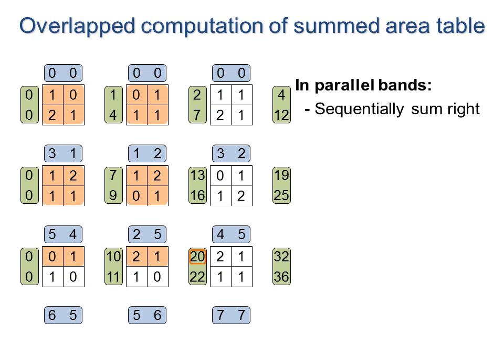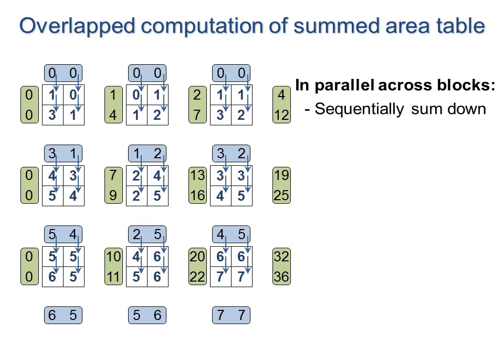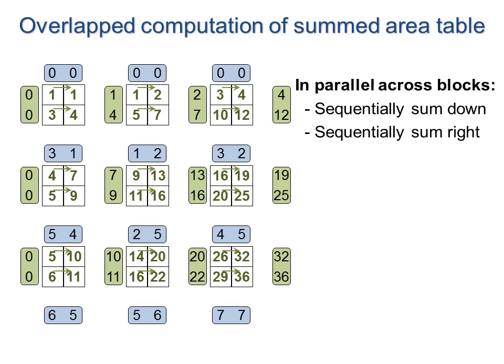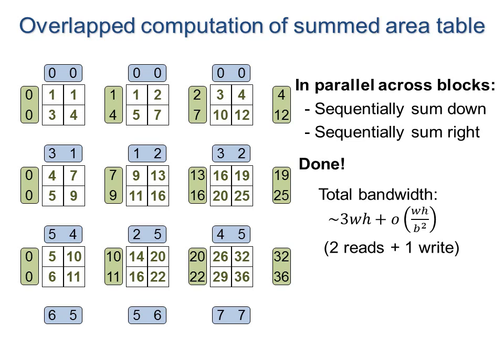Now the green number 20 represents this summed region, and the blue number 4 this summed region. In parallel across blocks, we sequentially sum down from the upper band, and then sequentially sum right from the left band. This completes the process.